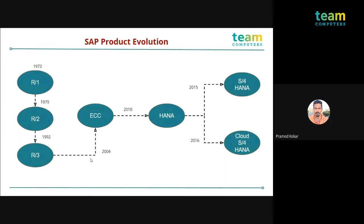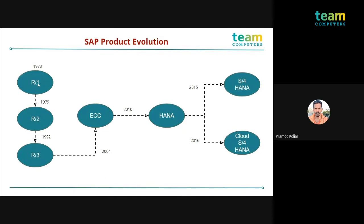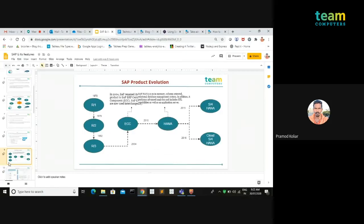Coming to the product evolution — the agenda for this slide is to understand the difference between SAP ECC, SAP HANA, and S4 HANA. The first product launched by SAP is R1. R stands for real-time processing and the number indicates the tier architecture. Similarly, R2 and R3 were also released. We'll first understand R1, R2, and R3 because it will be helpful for understanding ECC and its architecture.